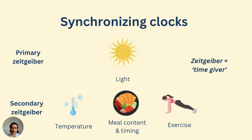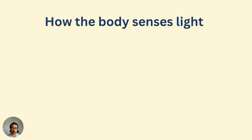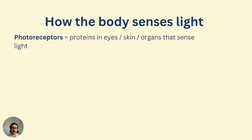How does our body sense light? The body senses light through photoreceptors — proteins that exist in various cells across a range of organs, most traditionally in the eyes, but also in the skin and other organs. The ability of the body to sense light is how it receives the light signal and trains all those circadian rhythms.